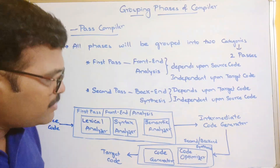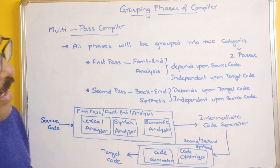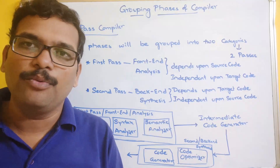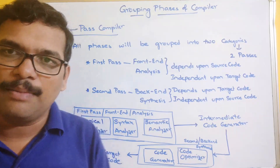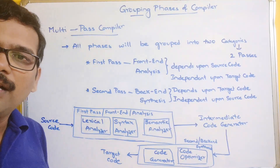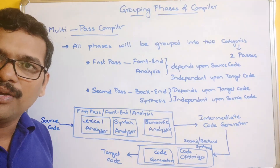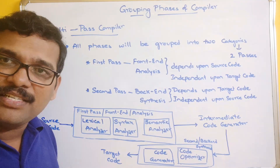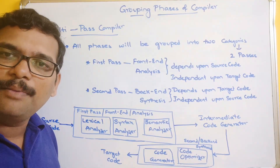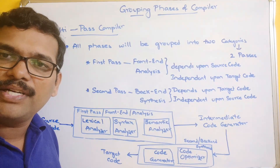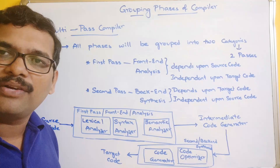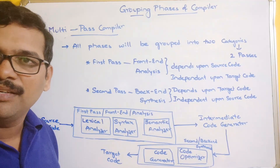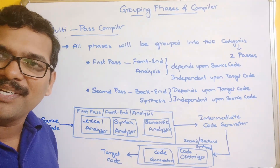I hope you understood the grouping of phases of a compiler and the different types of passes. If you have any queries, feel free to post your doubts in the comment section and I'll try to clarify them. If you enjoyed the session, please like, share with your friends, and don't forget to subscribe to our channel. Thanks for watching!